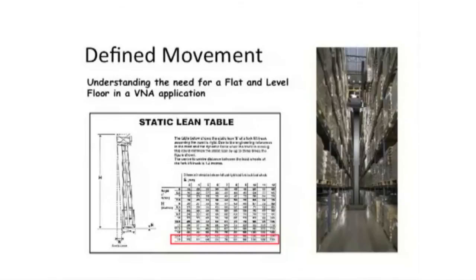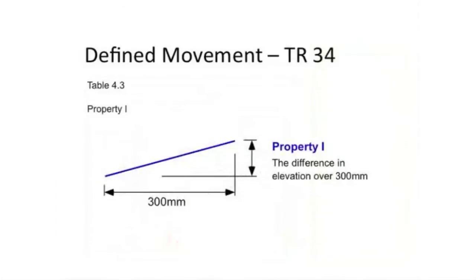What you're looking at is termed Property One. The truck has two front wheels; you measure a difference in elevation over a horizontal distance of 300 millimeters, and you end up with Property One — that's for the left wheel and for the right wheel. But most people fall into the trap of thinking that's the be-all and end-all of the specification. It isn't. What you're really looking for is the rate of change as that truck runs down the aisle. You can see those undulations translated pictorially — while the left wheel of the truck might be going up, the right wheel may be going down.